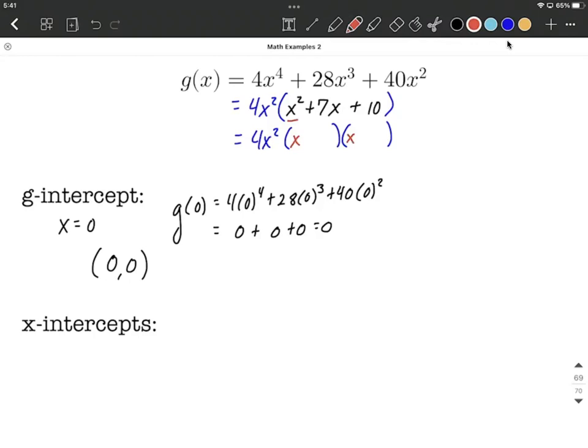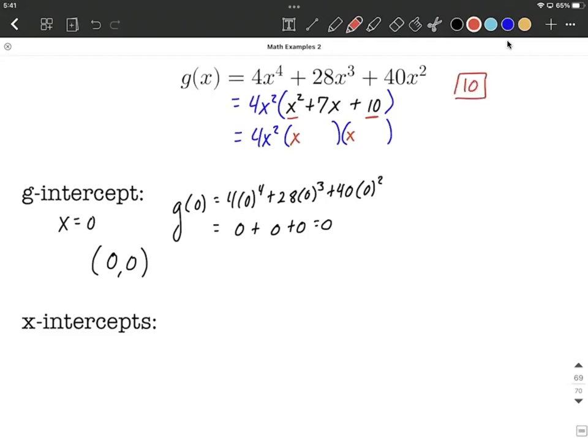The next thing I want to look at is the 10 at the end. I'm going to list that number off to the side and list out all the different ways to factor 10. It could be 1 times 10, or it could be 2 times 5. In this case, because it's a positive 10, we're looking for the pair that adds together to give us the middle number, 7.